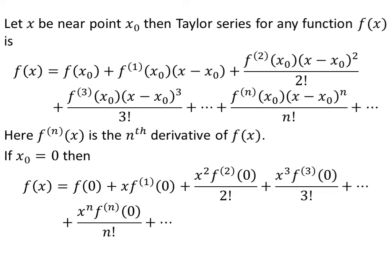Assume x0 is equal to 0. The Taylor series for function f of x is then given as the value of function f at point 0, plus x times first derivative of f at point 0, plus x squared times second derivative of f at point 0 upon factorial of 2, plus x cubed times third derivative of f at point 0 upon factorial of 3, plus so on up to infinity.